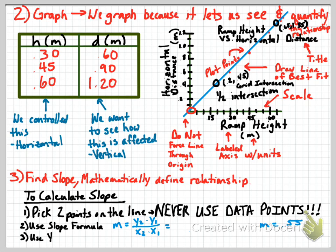The third thing you do is you find the slope of your graph, and that mathematically defines your relationship. So to calculate slope on our graphs, we pick two points on the line. They are not our data points. We will never, ever, ever use data points. Make sure we understand that. We will never use the data points from our data table. Just not going to do it. We'll use the slope formula. Somewhere along the line in one of your classes before you got to AP Physics 1, you were able to count up and over, rise over run, and determine a slope.